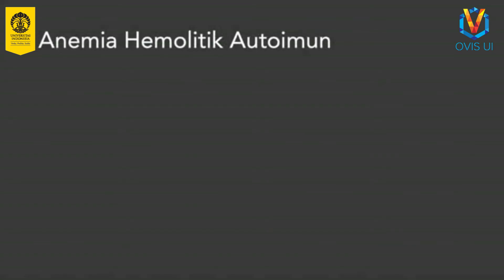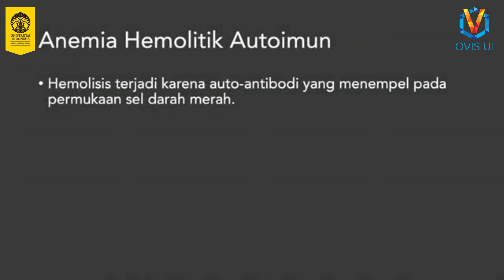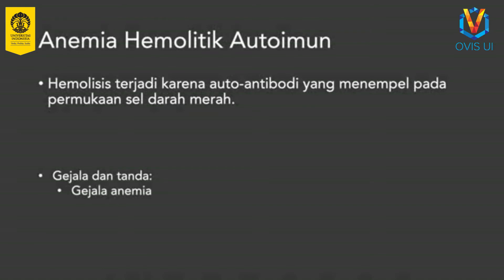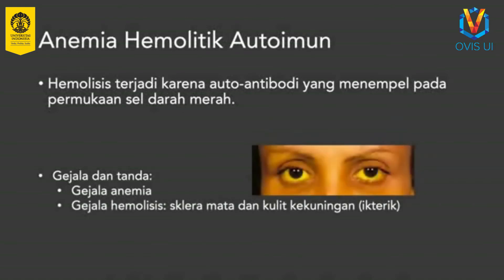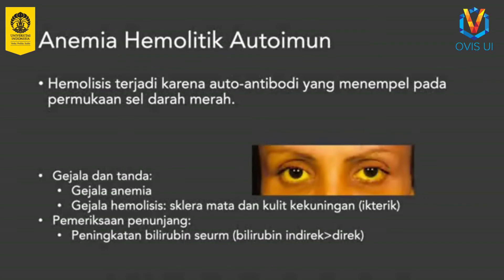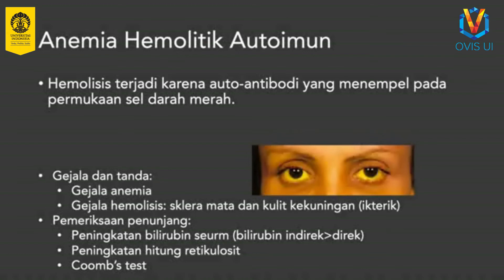Anemia hemolitik adalah anemia akibat peningkatan destruksi sel darah merah intravaskular. Terdapat berbagai kondisi yang menyebabkan anemia hemolitik, yang dapat diklasifikasikan menjadi penyakit yang didapat maupun diturunkan. Anemia hemolitik autoimun adalah salah satu jenis anemia hemolitik yang menyebabkan anemia normositik. Hemolisis disebabkan oleh antibodi yang berikatan pada permukaan sel darah merah dan memicu destruksi sel oleh mekanisme imun. Kondisi ini ditandai dengan gejala anemia seperti pucat disertai gejala hemolisis yaitu kulit dan sklera mata berwarna kekuningan. Pemeriksaan laboratorium dapat menunjukkan peningkatan bilirubin serum dan peningkatan hitung retikulosit, disertai dengan peningkatan bilirubin indirect yang lebih besar daripada bilirubin direct. Diagnosis pasti anemia hemolitik autoimun ditegakkan melalui pemeriksaan Coombs test yang menunjukkan adanya antibodi di permukaan sel darah merah.